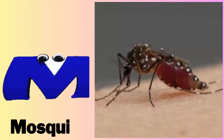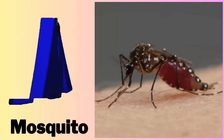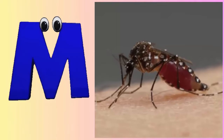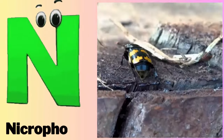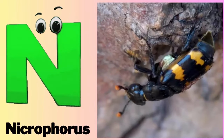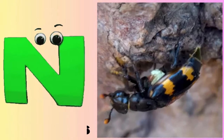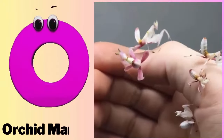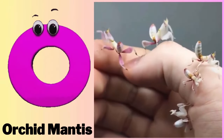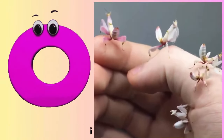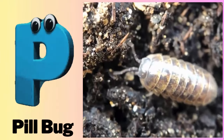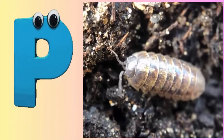M - M for mosquito. N - N for nicrophorus. O - O for orchid mantis. P - P for pill bug.